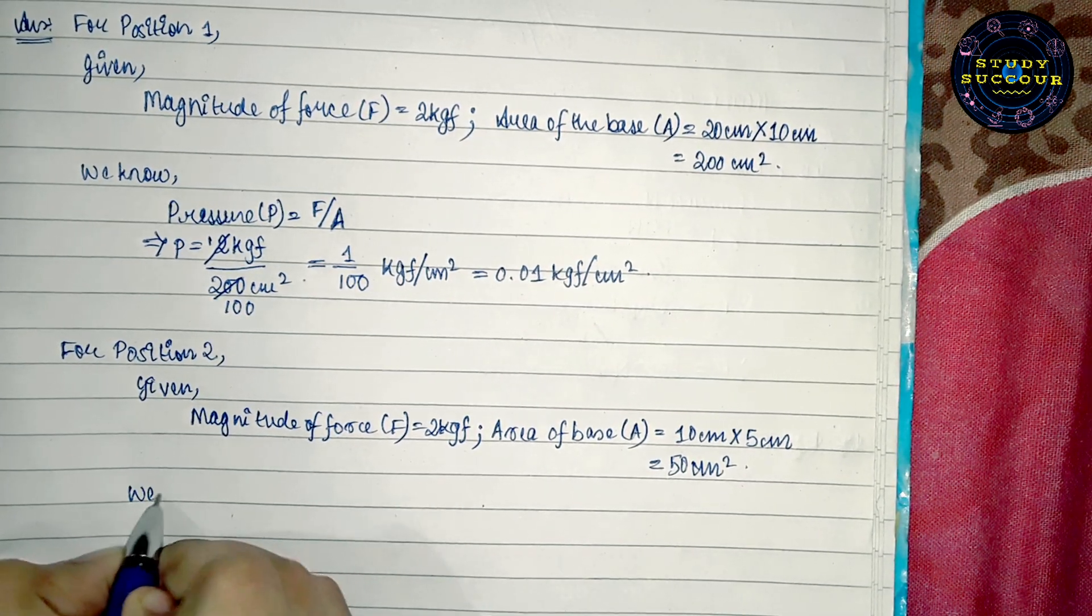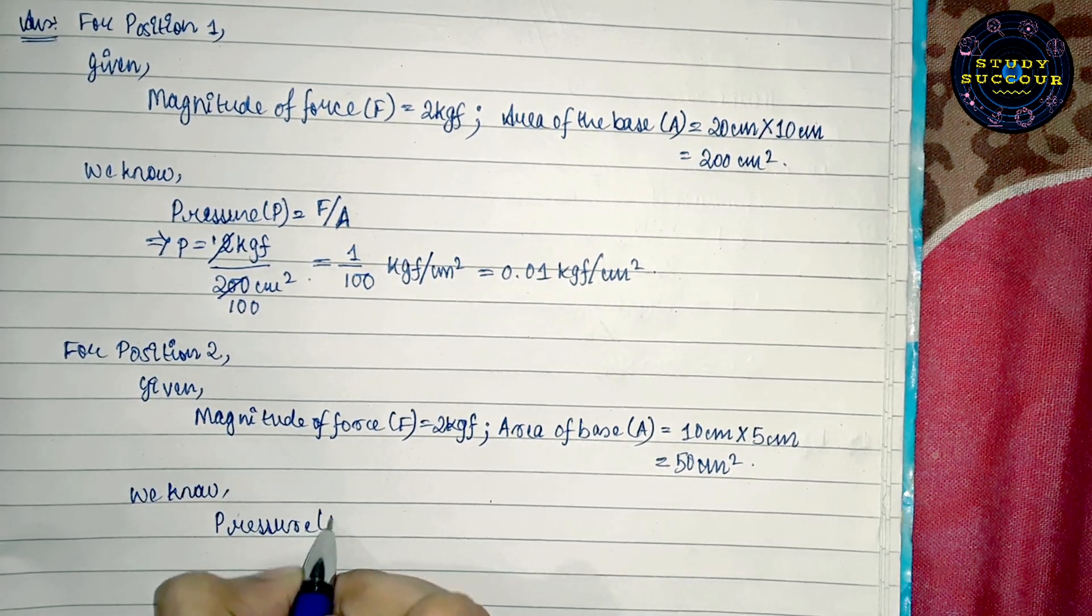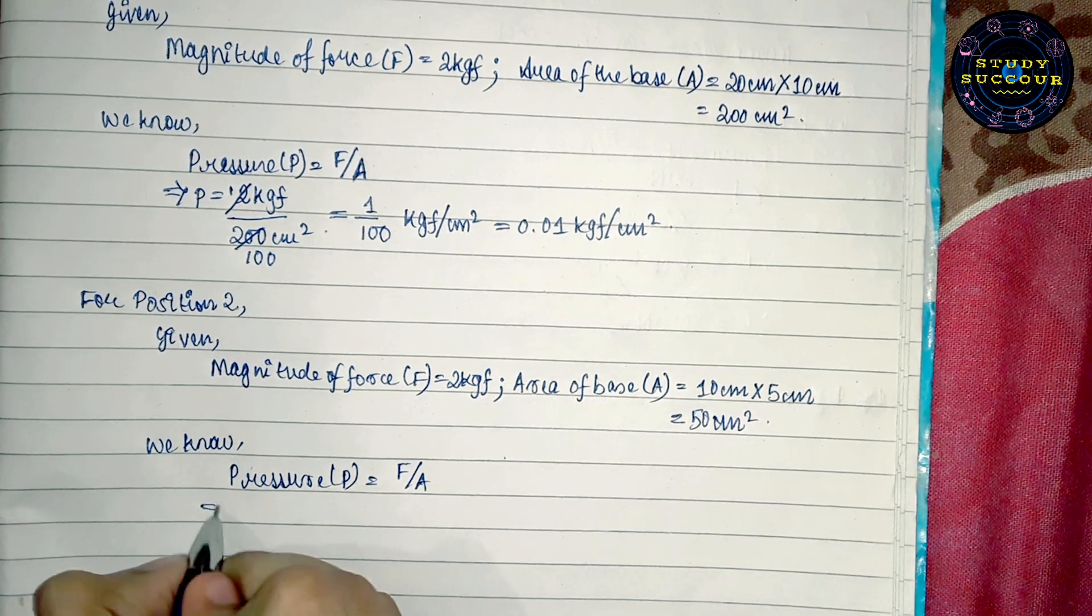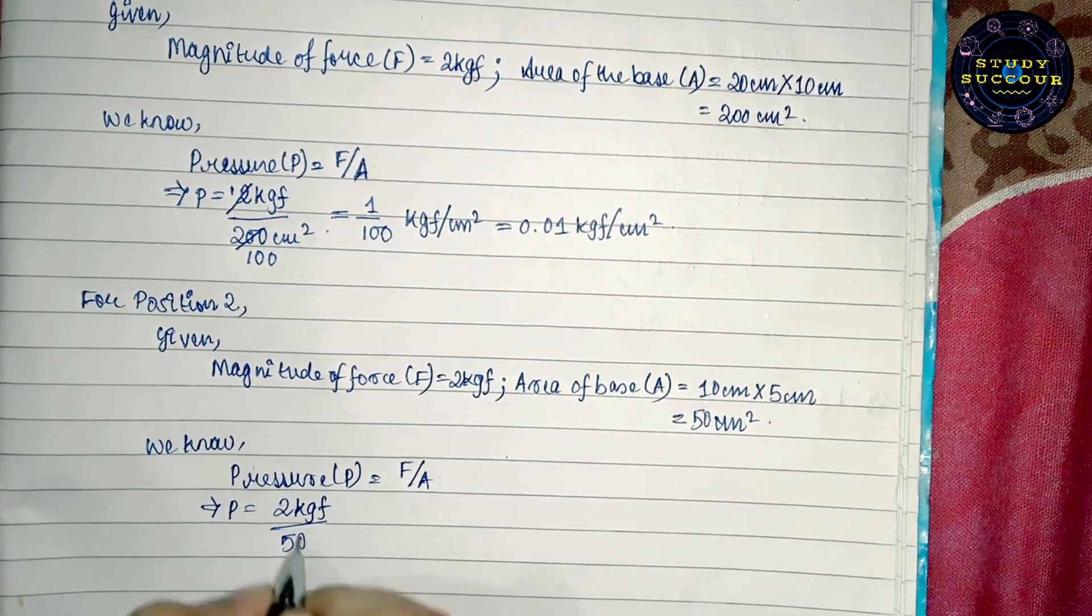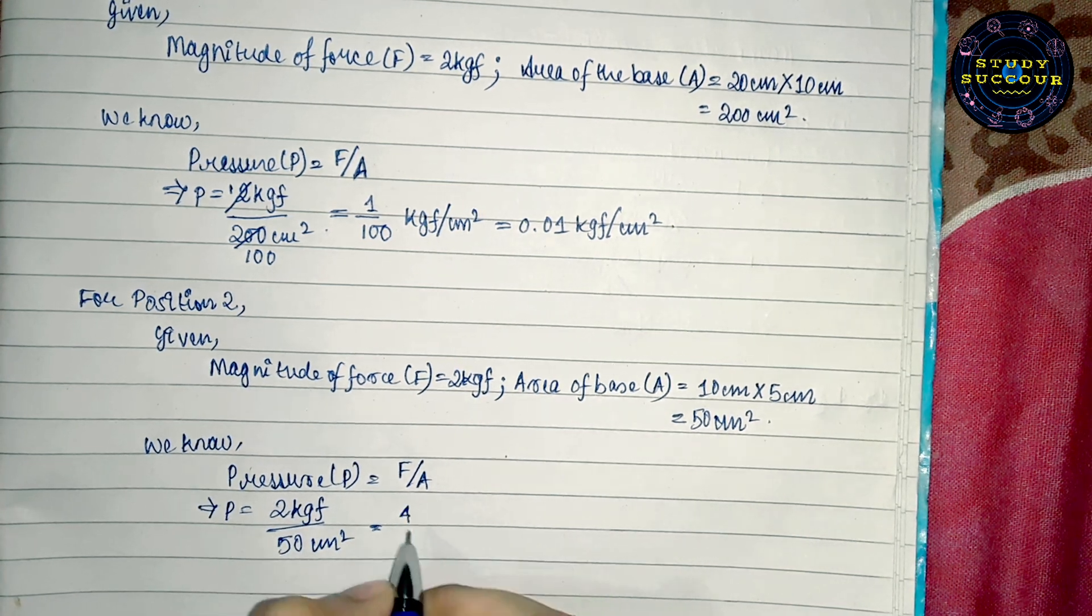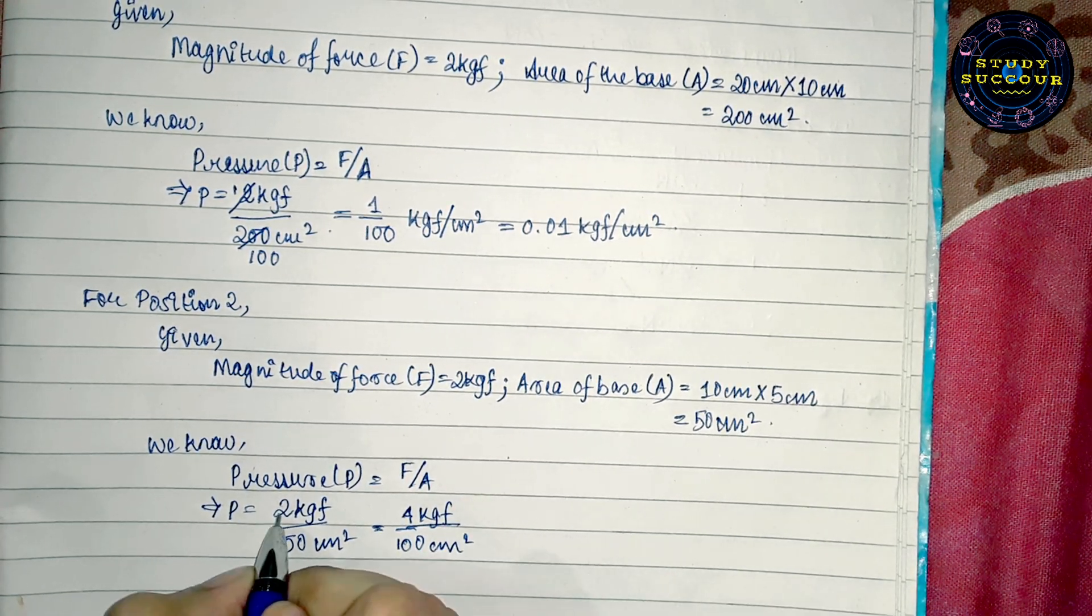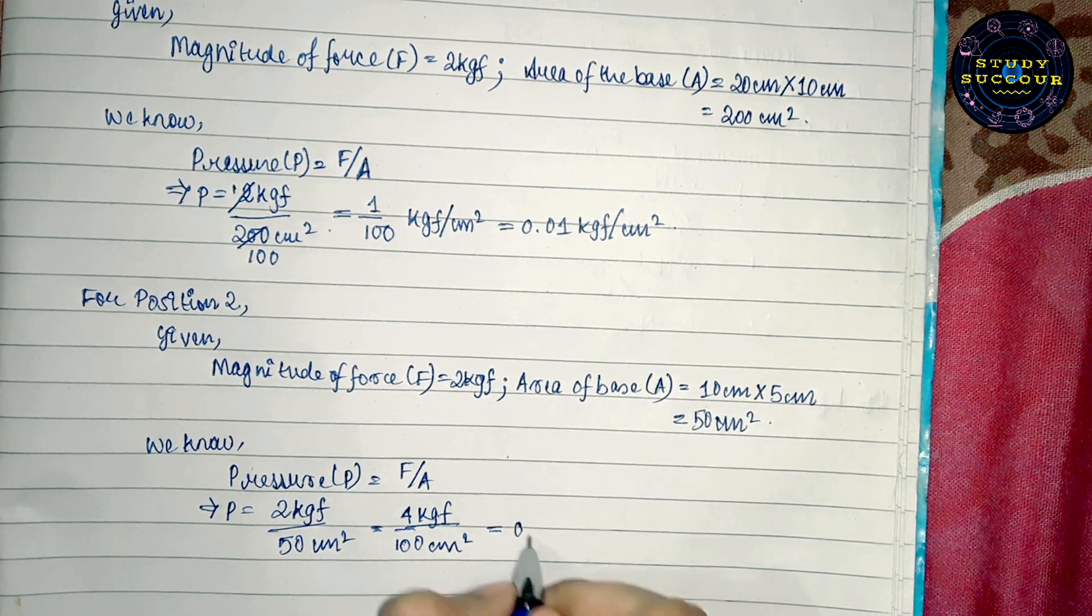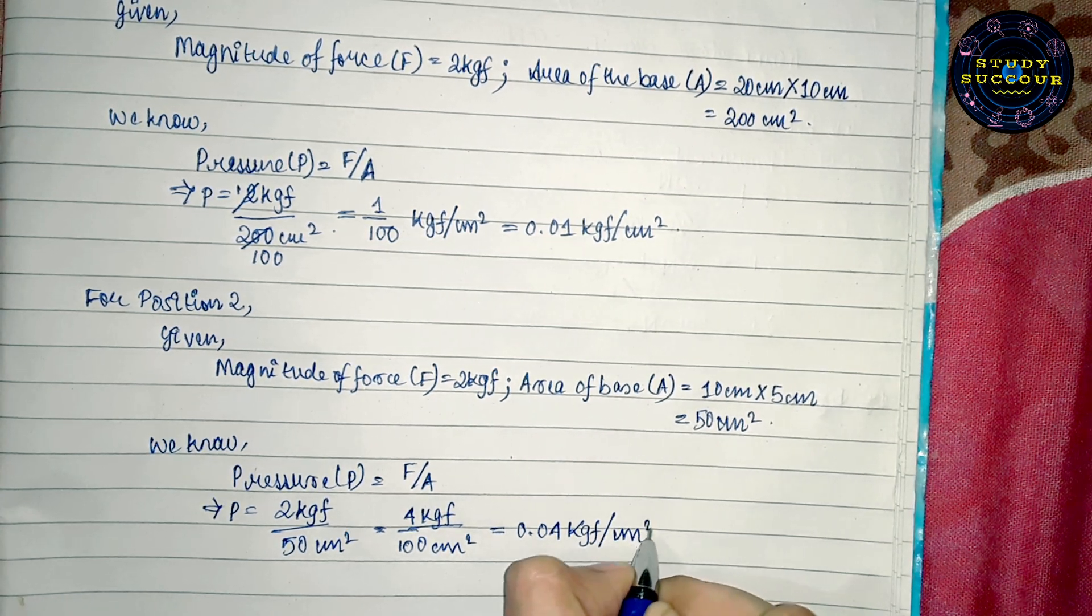Again, we know pressure P equals magnitude of force F by area of base A. So, P equals 2 kgf by 50 cm². This can also be written as 4 by 100, 4 kgf by 100 cm², because 2 x 2 is 4, then 50 x 2 is 100. This can be written as 0.04 kgf per cm².